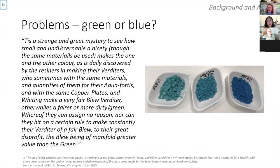However, the early commentators talked about how it was quite problematic. Merritt writes it is a strange and great mystery to see how small and undiscernable a nicety, though the same materials be used, makes one color or the other. The resiners sometimes made very fair blue verditer, otherwise a fairer or more dirty green, whereof they can assign no reason, the blue being of manifold greater value than the green.